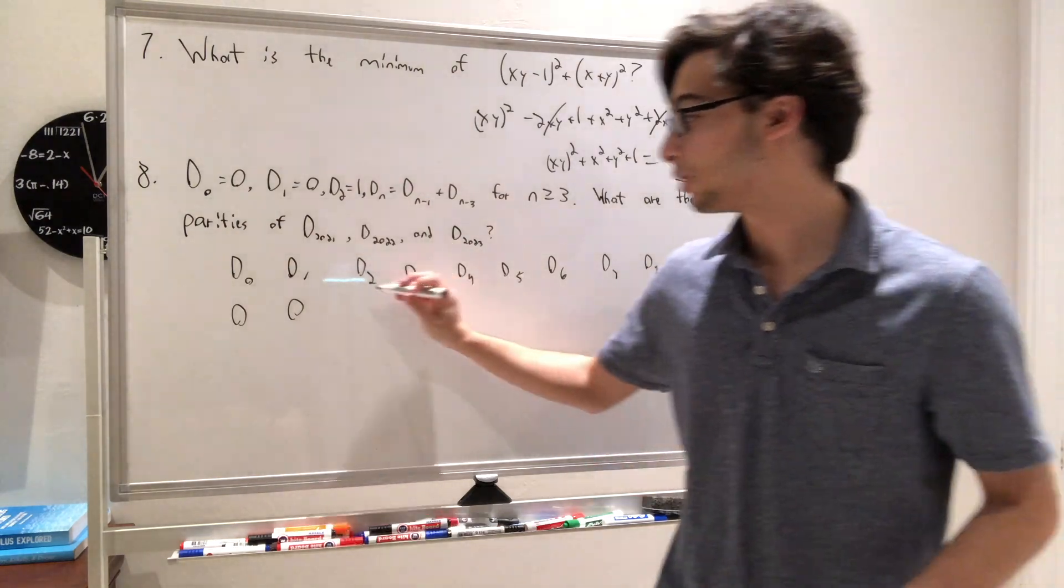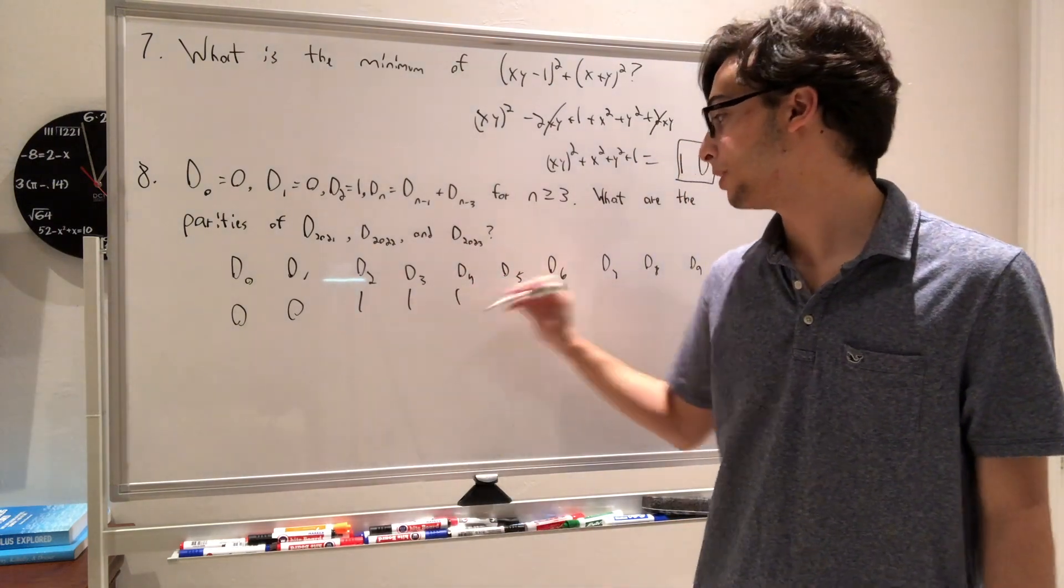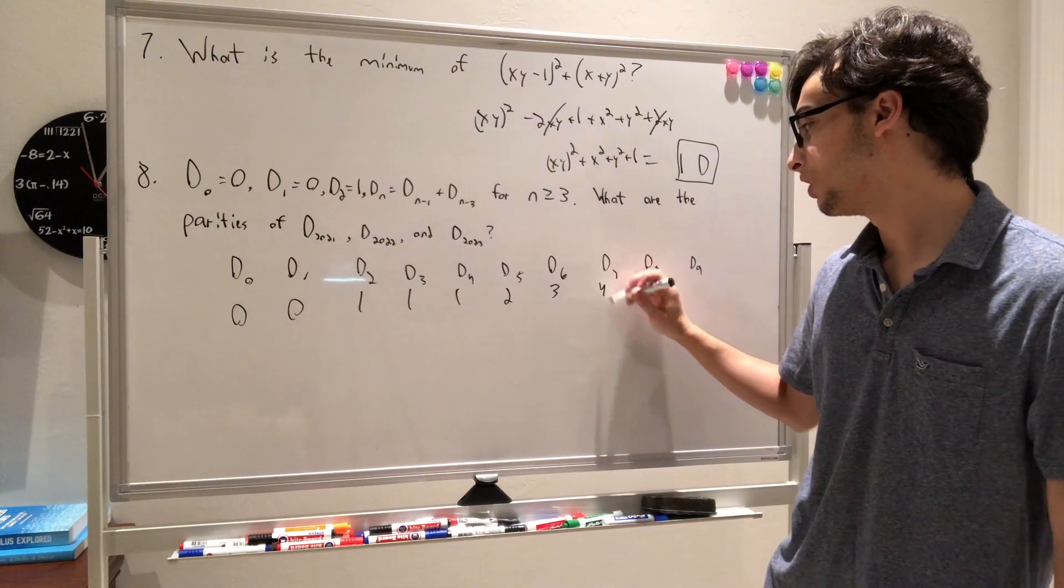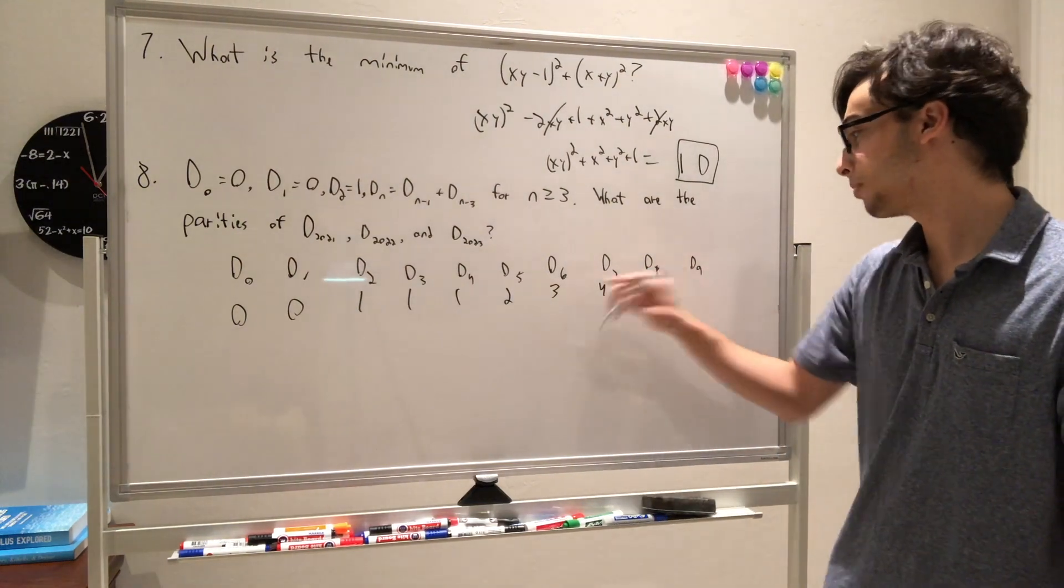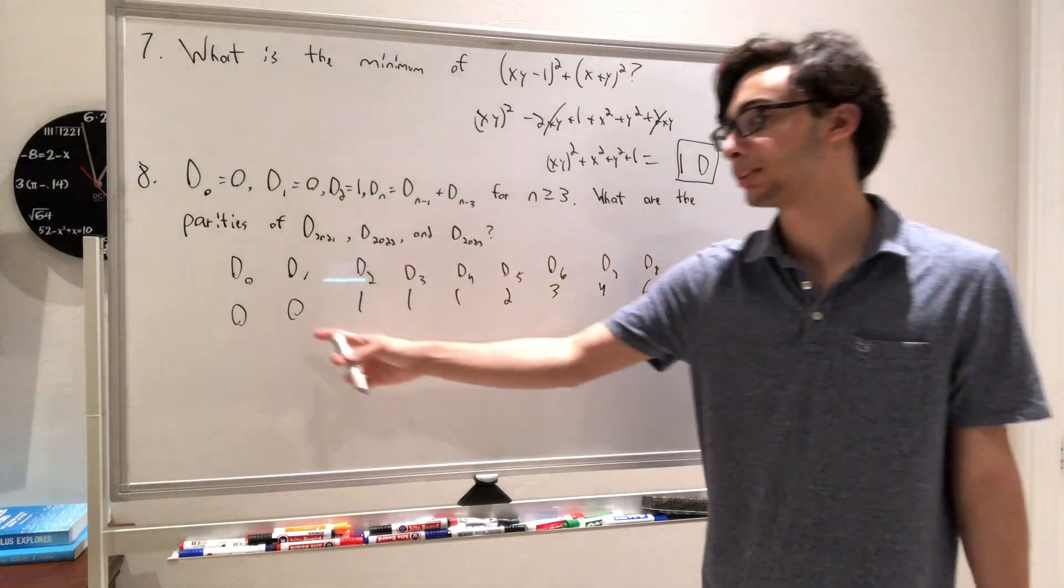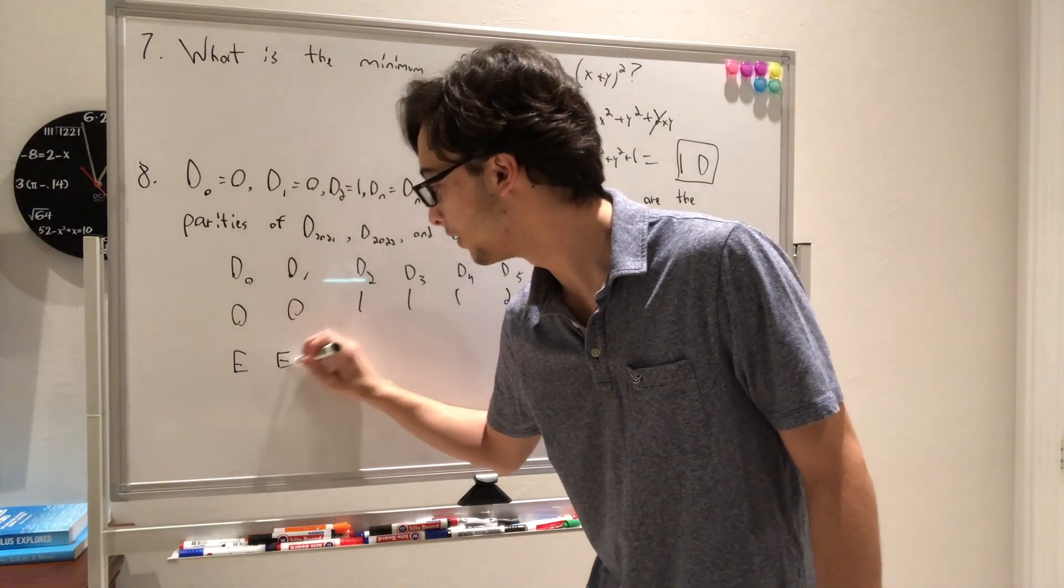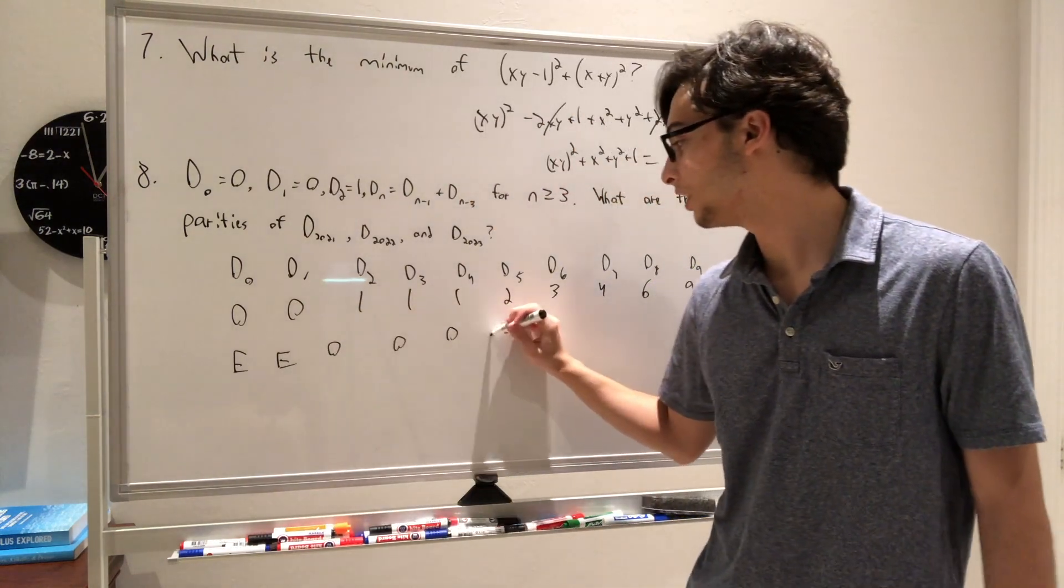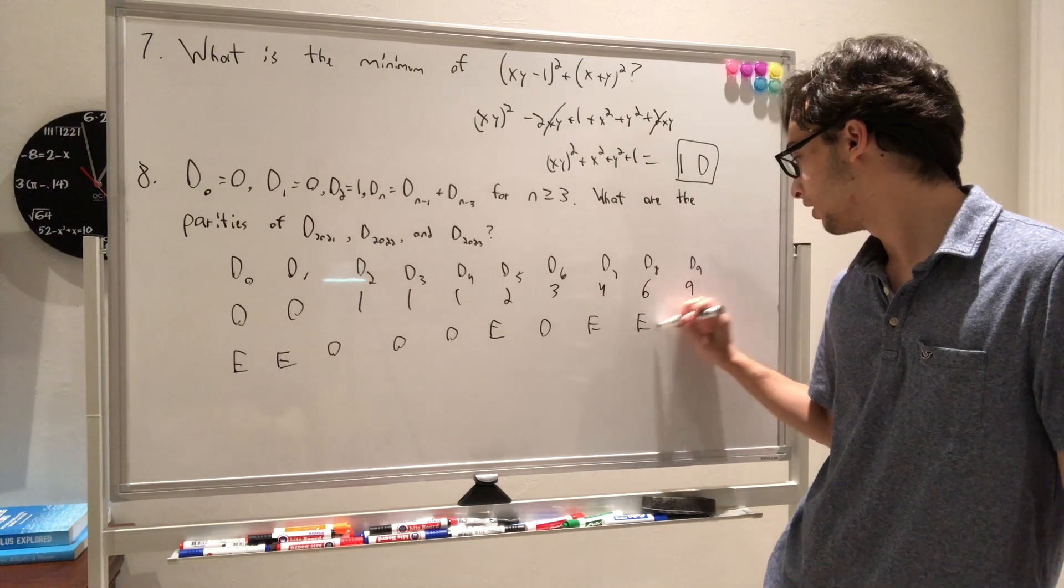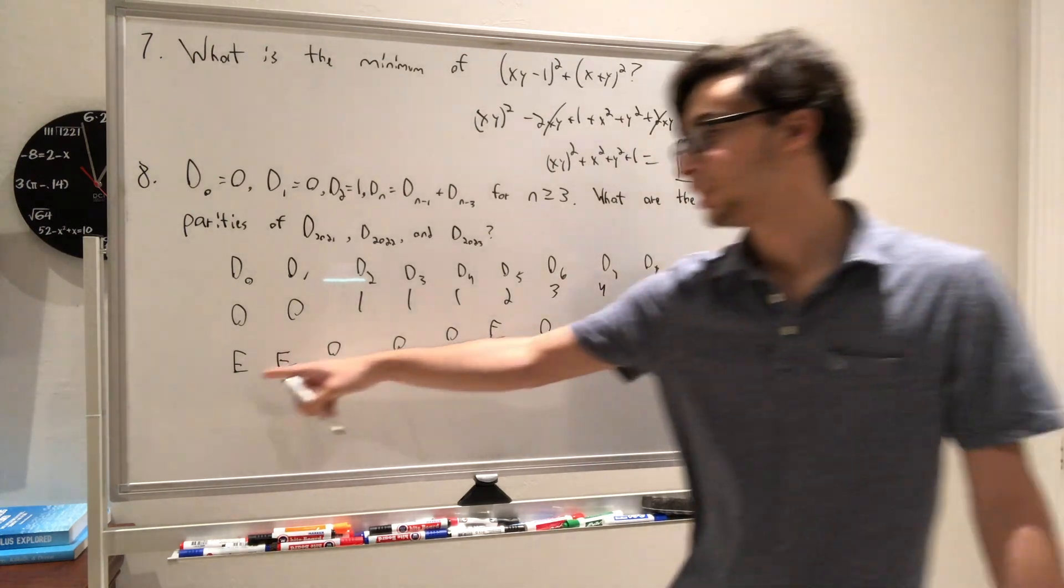And so now we have D2 is equal to 1, D3 is going to be 1 plus 0, which is 1, D4 is going to be 1 plus 0, which is 1, D5 is going to be 2, D6 is going to be 3, D7 is going to be 4, D8 is going to be 6, and D9 is going to be 9. So now let's write it up with parities, because that's what we really care about. We don't care about what these numbers are, we care about whether or not they're odd or even. So even, even, odd, odd, odd, even, odd, even, even, odd.